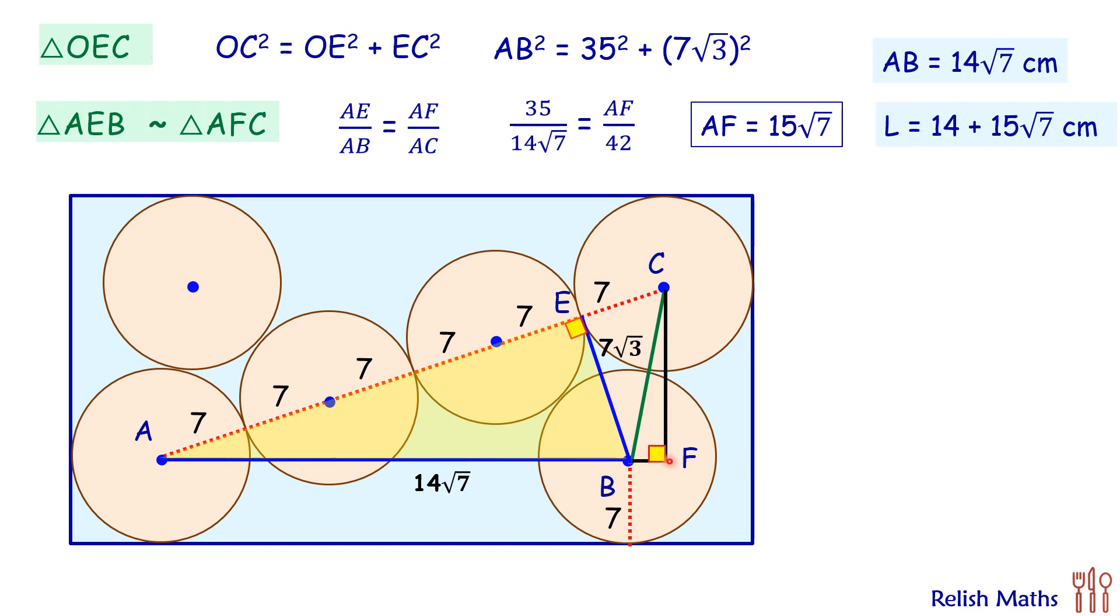Same way we can find the breadth CF. Again, the triangles are similar, so the ratio of corresponding sides are equal. When we put the values here and solve, we'll get FC as 3√21. In this FC, if we add the radius on top and bottom, we'll get breadth of the rectangle as 14 plus 3√21 centimeters.